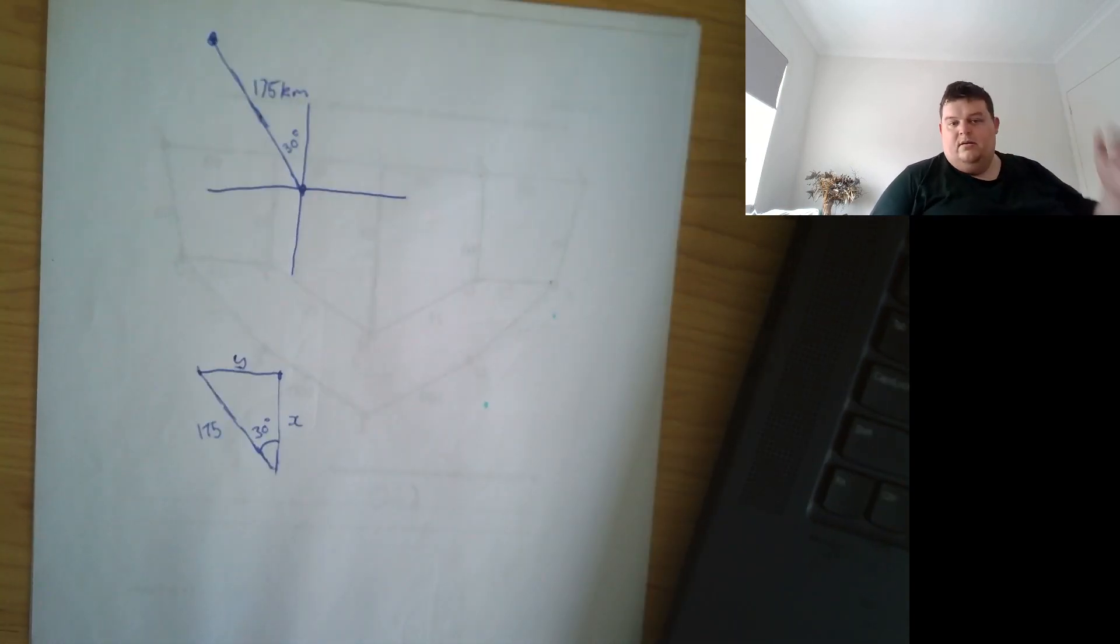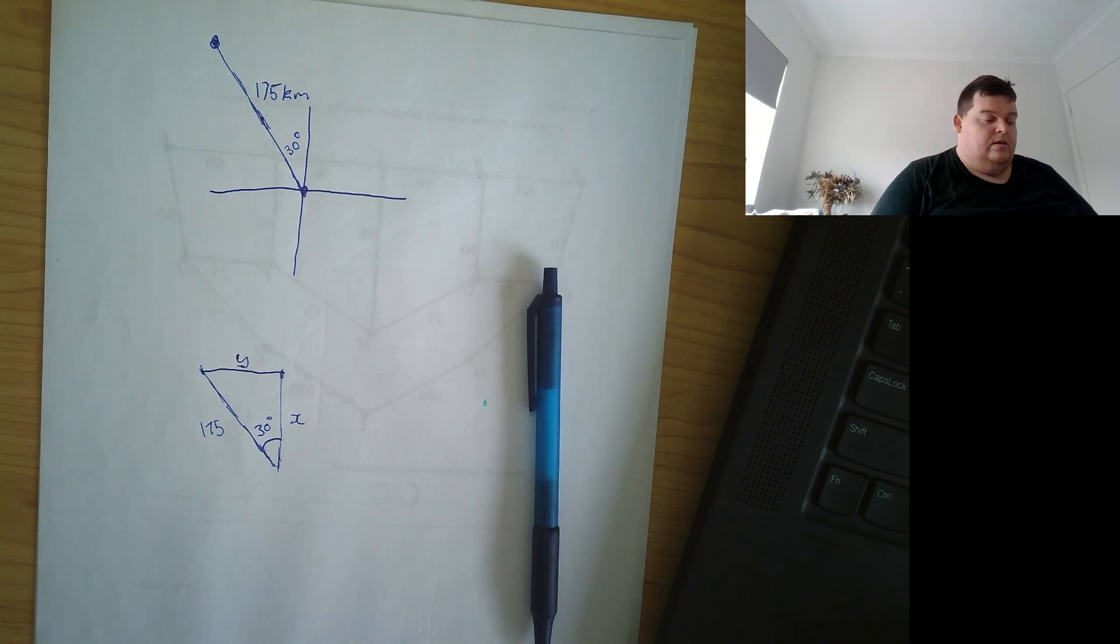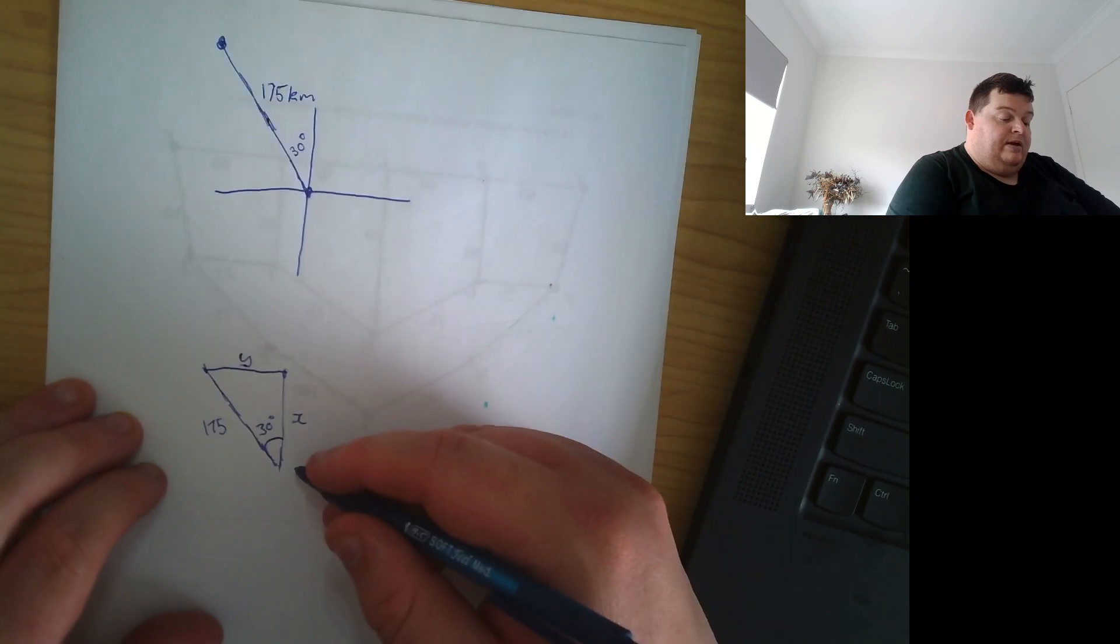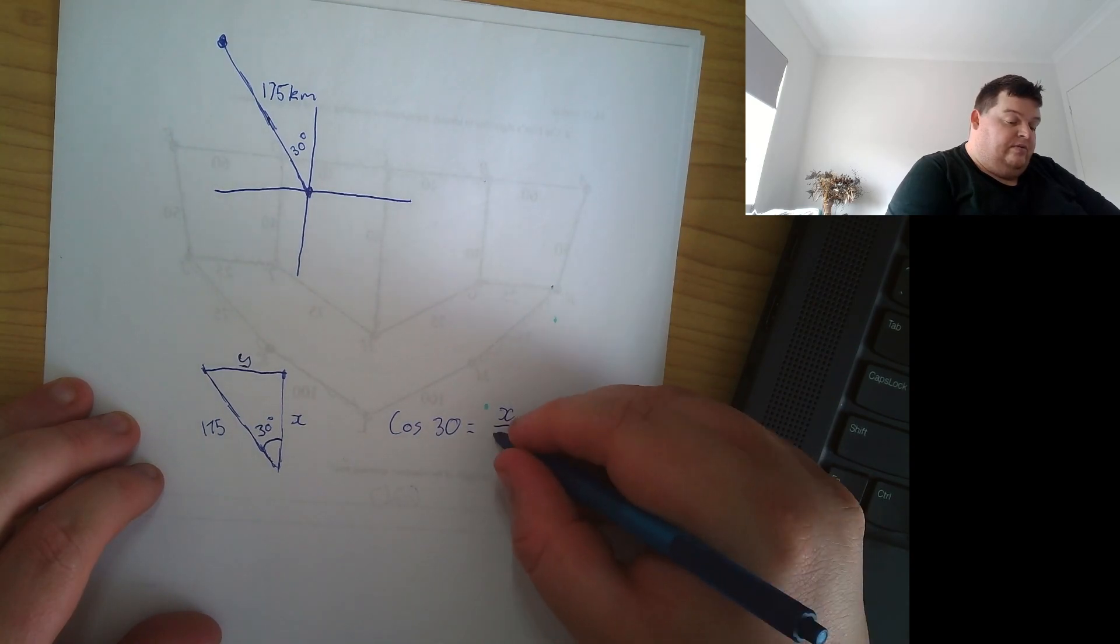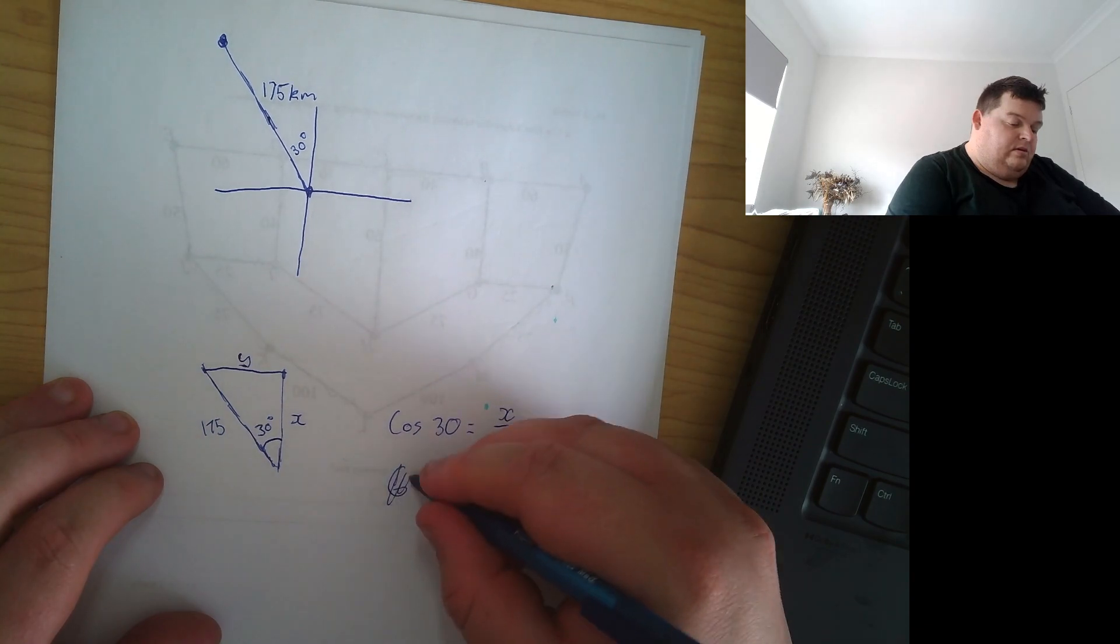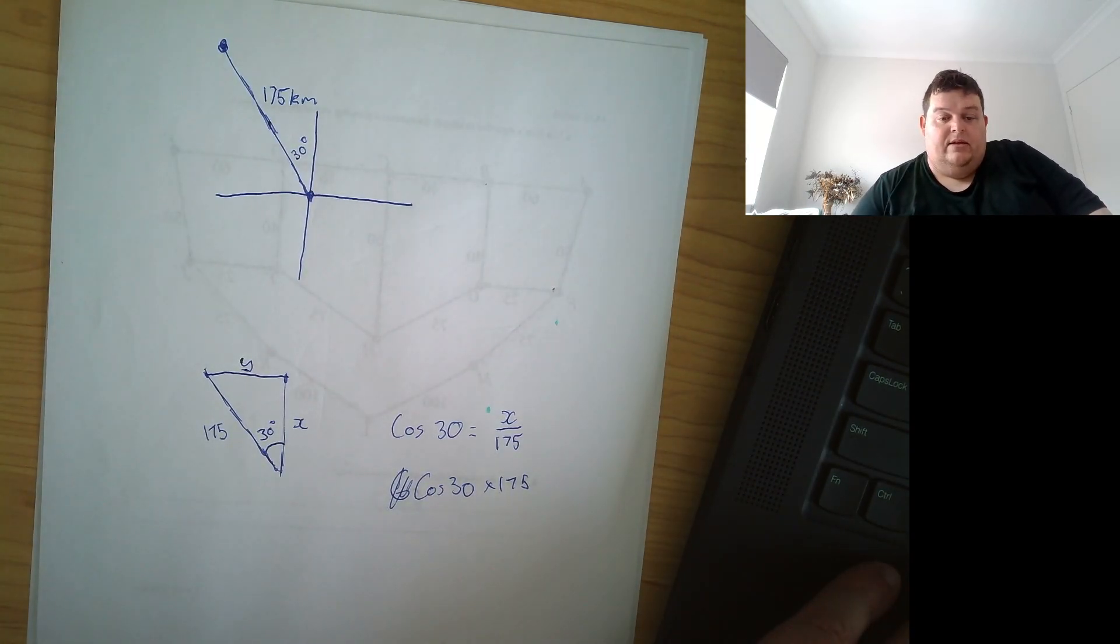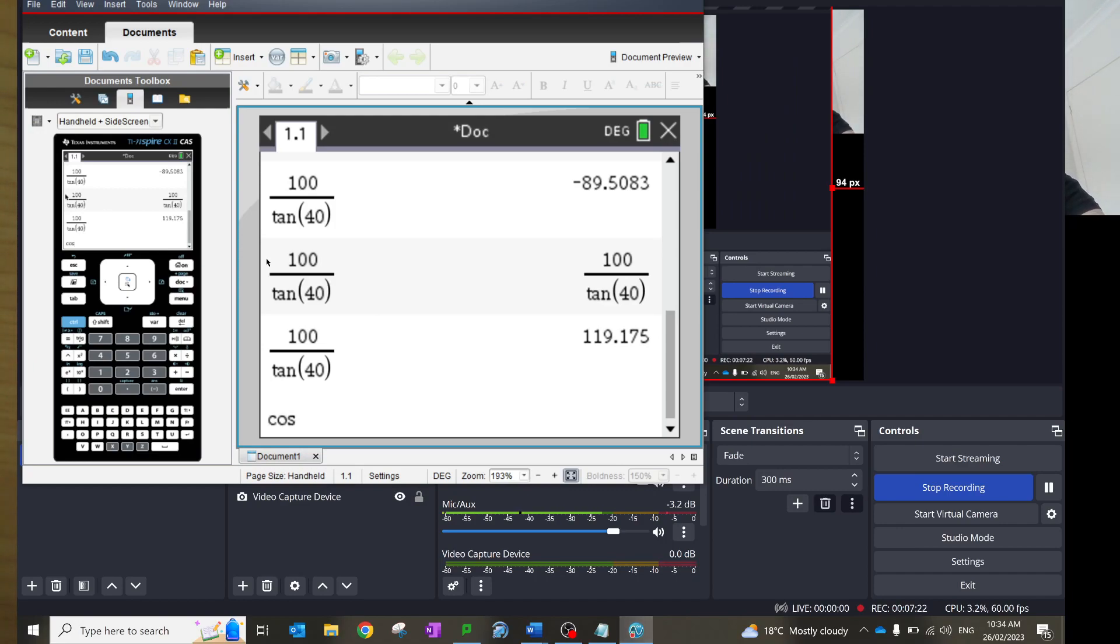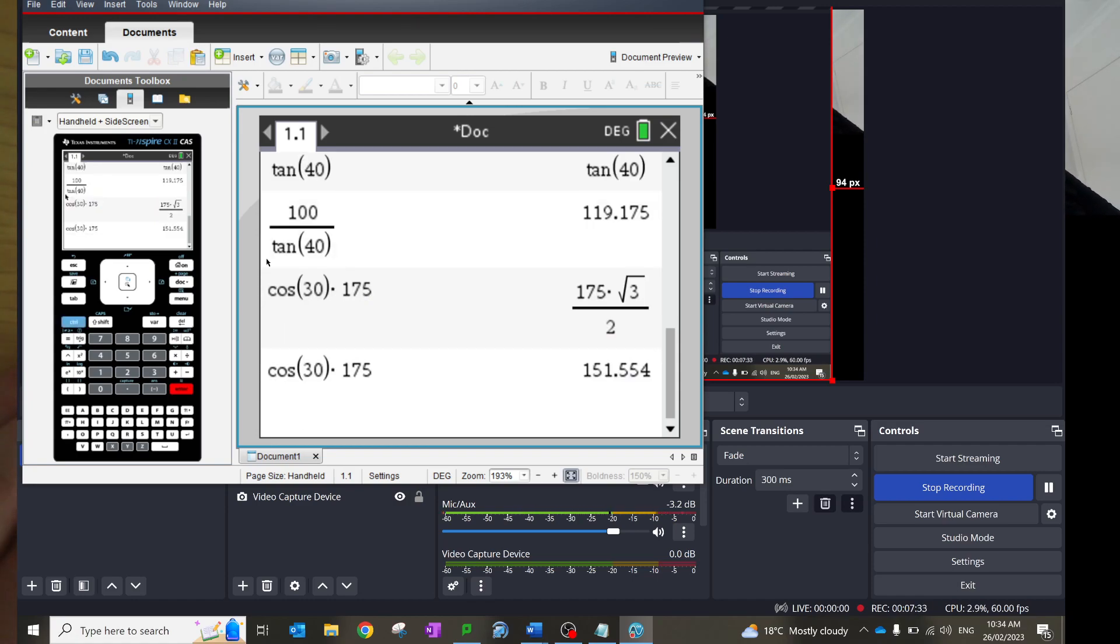All of a sudden it's like, hang on a minute. We can do this. This is SOHCAHTOA, you know, so let's do that. So we'll do the x first. So we got adjacent and hypotenuse is cos, cos 30 degrees equals x over 175, which means it's cos 30 times 175. Let's do that. It gives me, so x equals 151.55 kilometers. Alright.